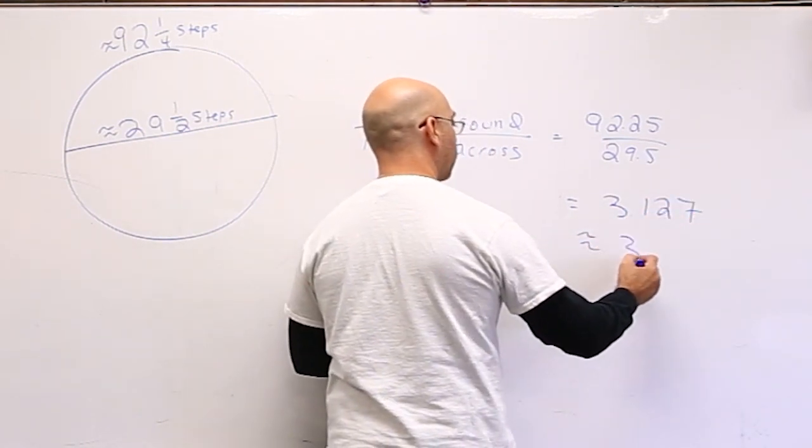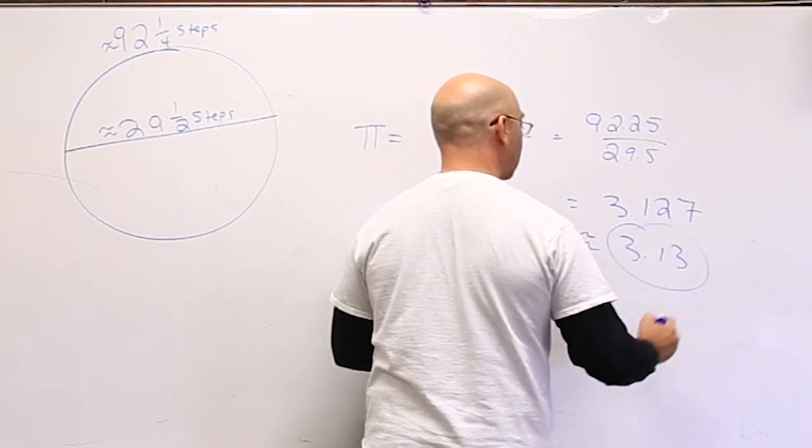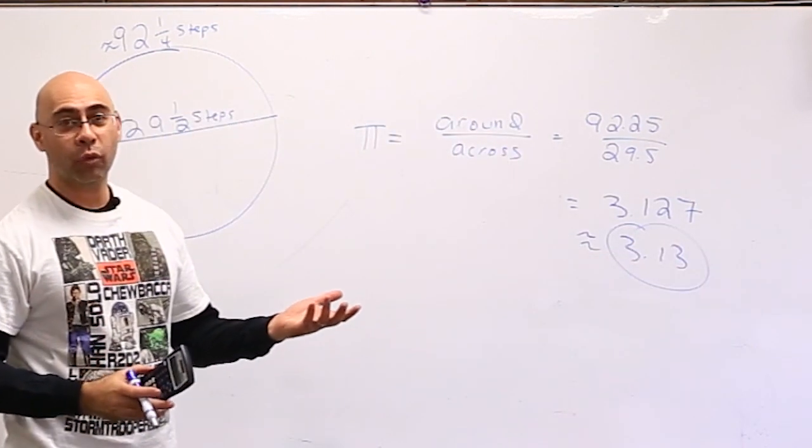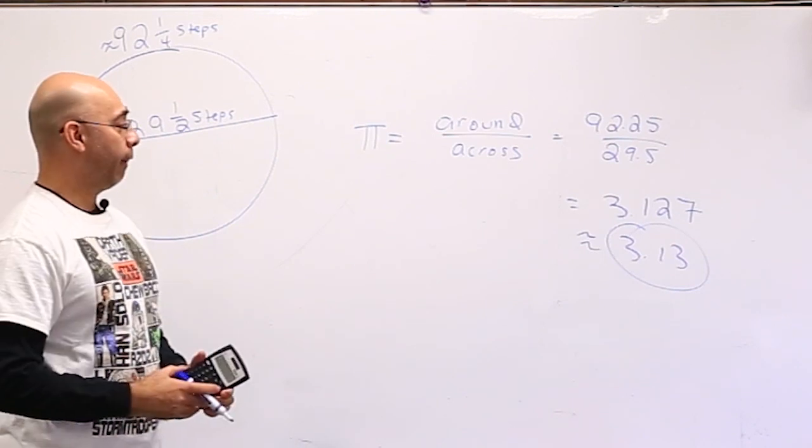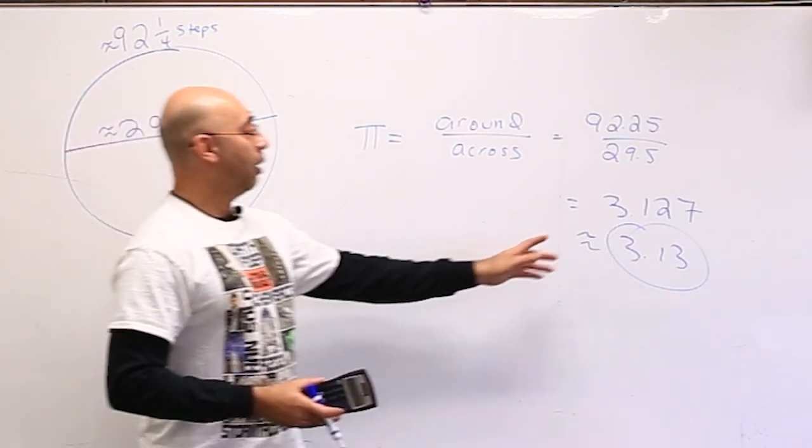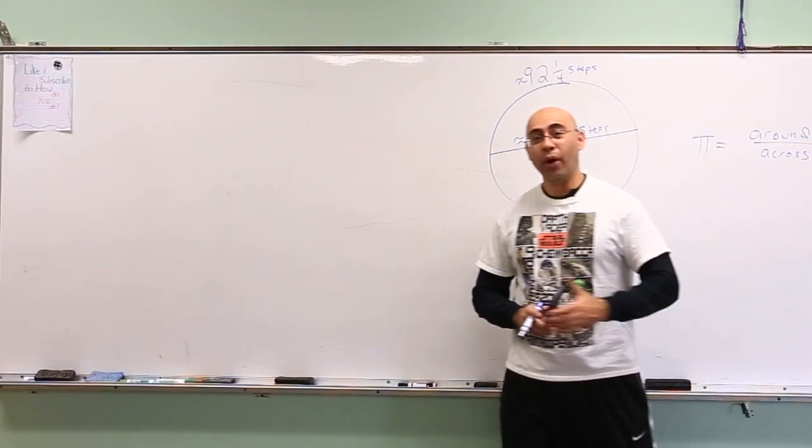That is about 3.13. So I was a little bit off. Pi is actually 3.14159 and many more digits going on forever. But I got pretty close, so I'm quite happy with that.